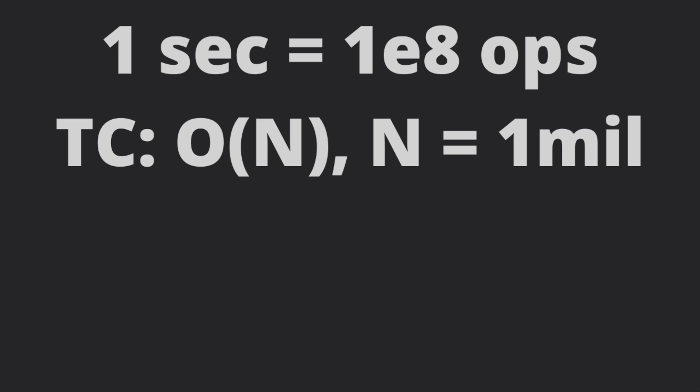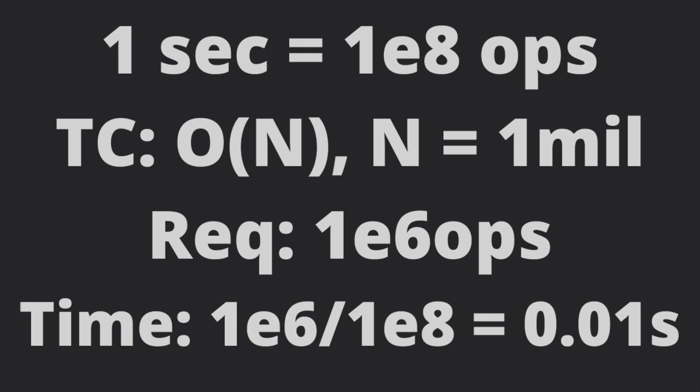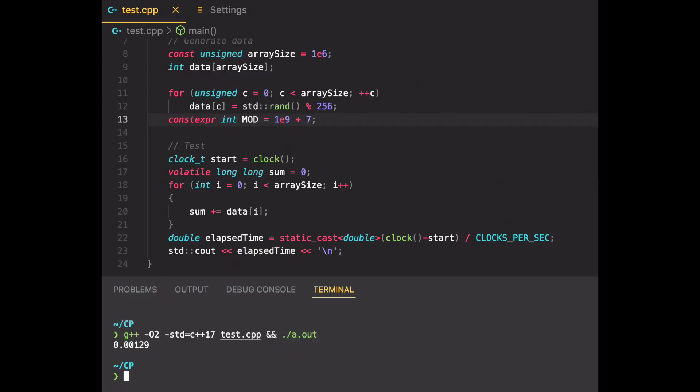So if an algorithm takes O n time and n is a million, you can assume it takes 1e6 ops and your CPU can do 1e8 ops in one second. So if you divide 1e6 by 1e8, you get 0.01 seconds. And so your CPU can do this in about 10 milliseconds. And if we compare this with the actual results benchmarked in our code, we can see it is not off by much.